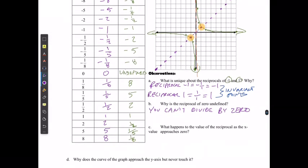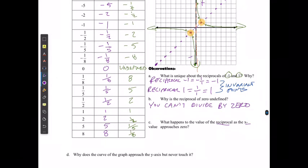What happens to the value of the reciprocal as the x value approaches 0? Well, I can see it approaching 0 on this negative side, as well as on this positive side, where it's going to get closer and closer and closer to x equaling 0.